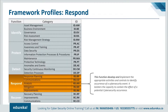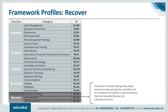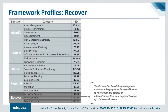The Respond function is used to develop and implement appropriate activities to take action regarding a detected cybersecurity incident. It supports the ability to contain the impact of a potential cybersecurity incident. Outcome categories within this function include response planning, communications, analysis, mitigation, and improvements. The Recover function is used to develop and implement appropriate activities to maintain plans for resilience and to restore any capabilities or services impaired due to a cybersecurity incident. It supports timely recovery to normal operations to reduce the impact of a cybersecurity incident. Examples of outcome categories include recovery planning, improvement, and communications. These five functions represent the five primary pillars for a successful and holistic cybersecurity program, aiding organizations in expressing their management of cybersecurity risk at a high level and enabling risk management decisions.